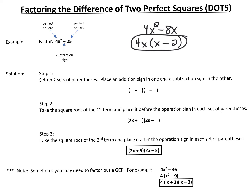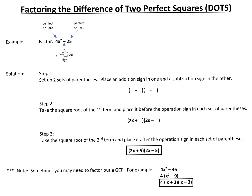The other thing you want to look for when you have two terms is whether you have a difference — which means a subtraction sign — of two terms that are both perfect squares.